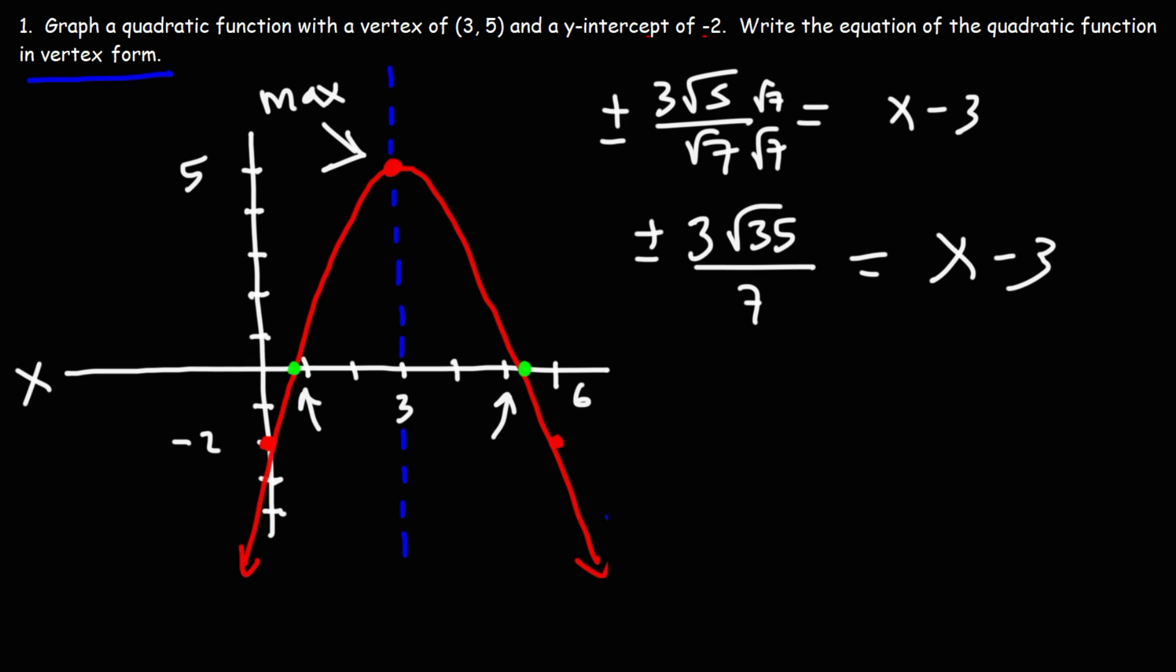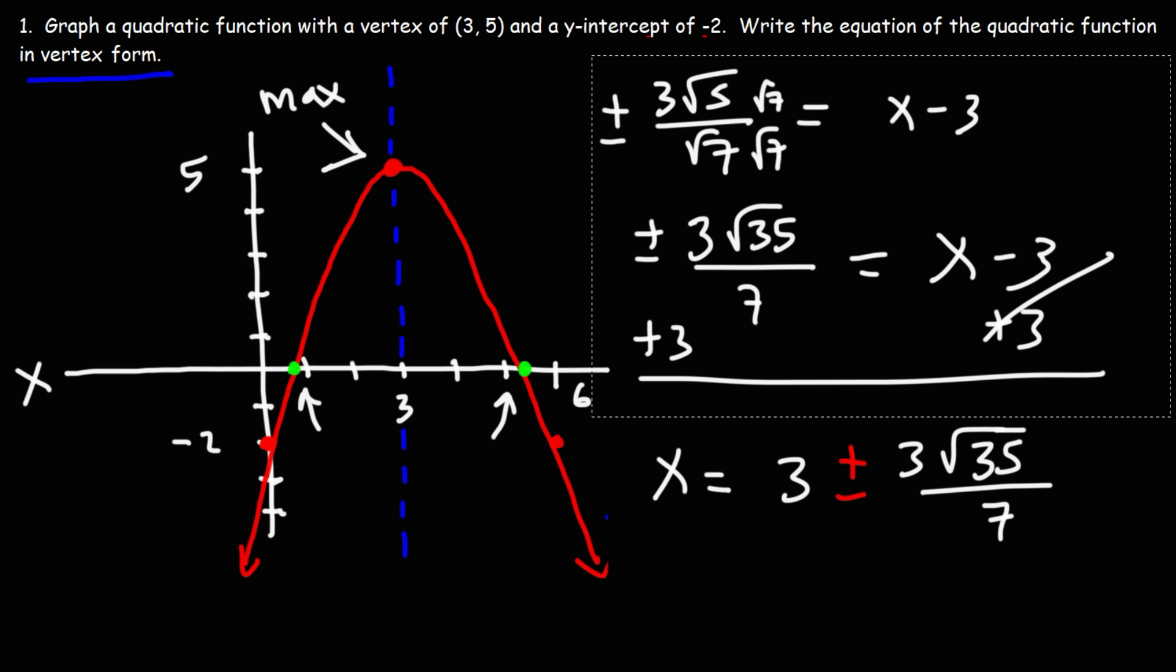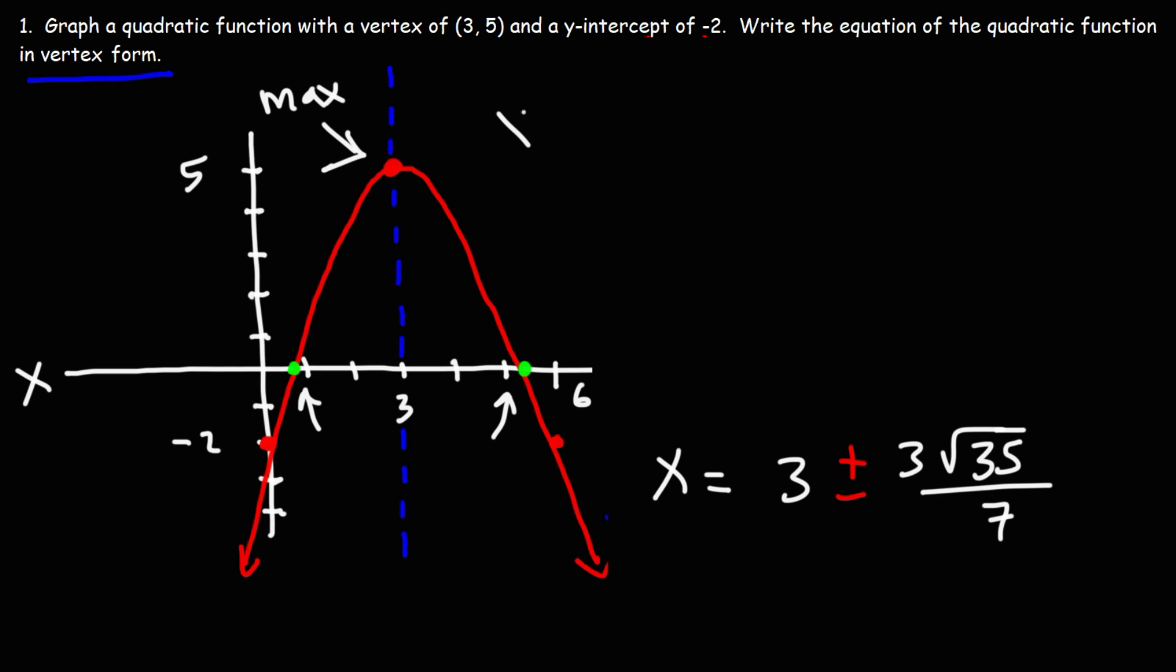Now to get x by itself, I'm going to add 3 to both sides. So we have x = 3 ± 3√35/7. So we have two answers here, and we're going to get the decimal equivalent of each one. So the first answer is 3 + 3√35/7, and the second answer is 3 - 3√35/7.